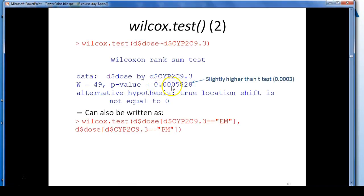You get a p-value here, 0.0005, which is slightly higher than the one you received in the T-test using the same data. And that is often the case that you get somewhat less significant results using a non-parametric test, but it's not always the case, and it depends on the distribution of the data.